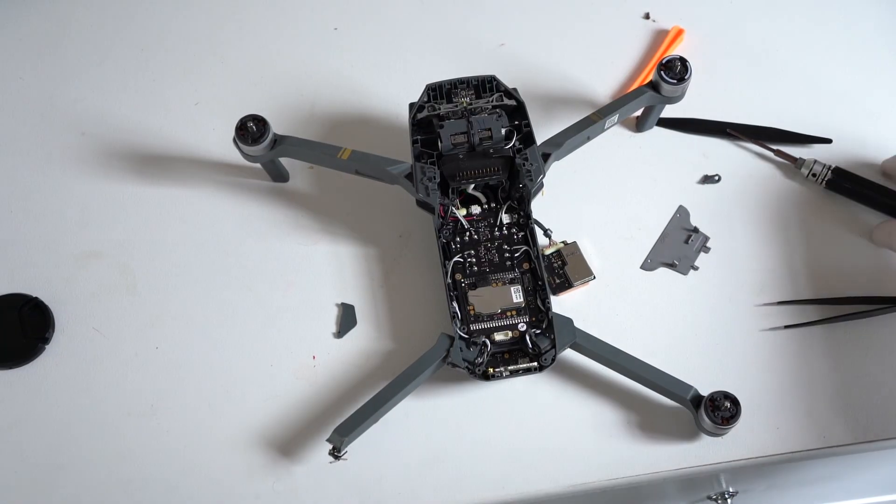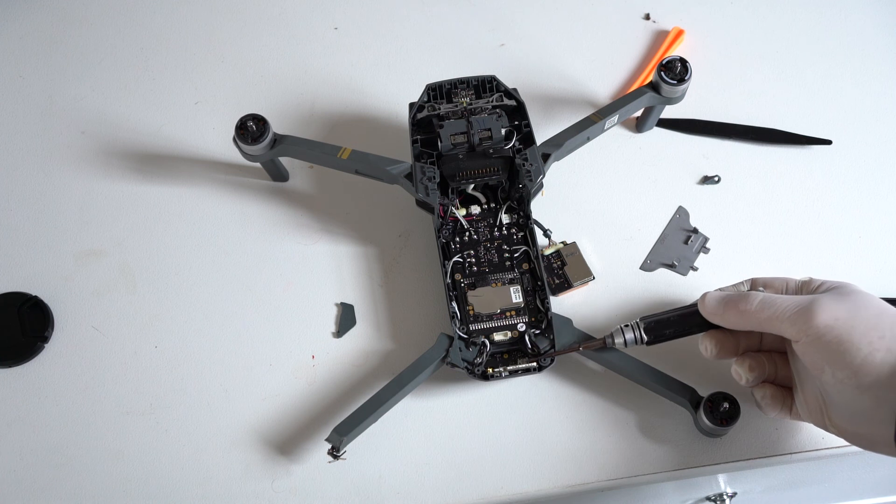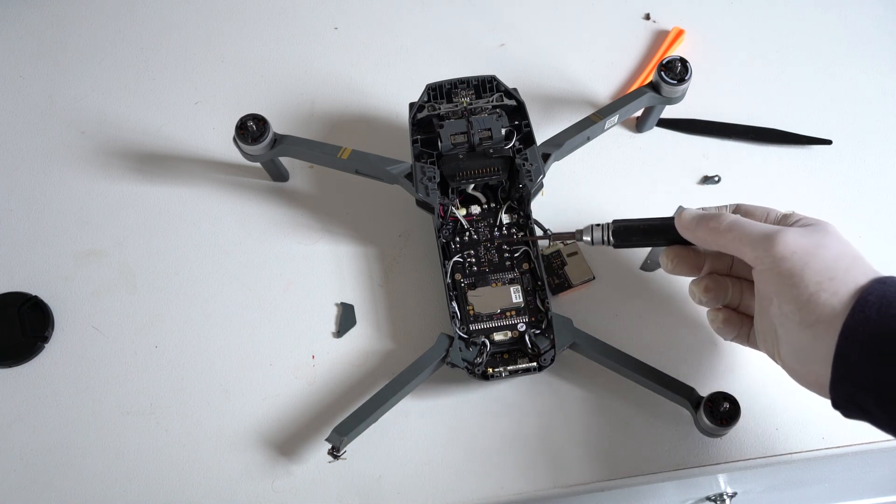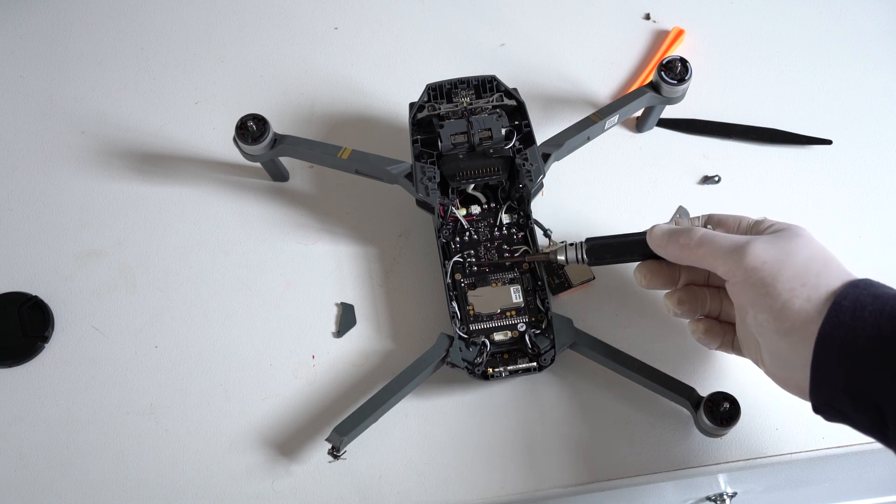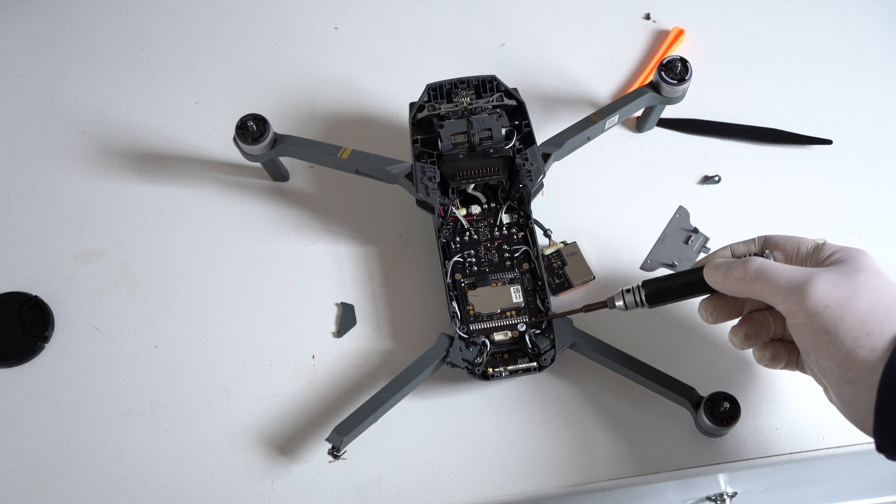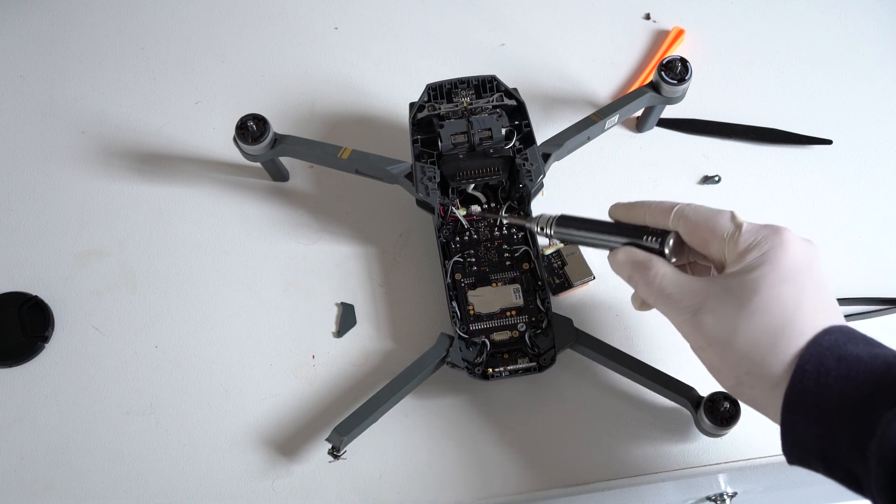Now that the drone is facing up, we can see the ESC board. The motors are wired onto the ESC board. We are going to have to replace this ESC board because we are getting an error on it. So all of these motors have to be desoldered as well as the power connector.